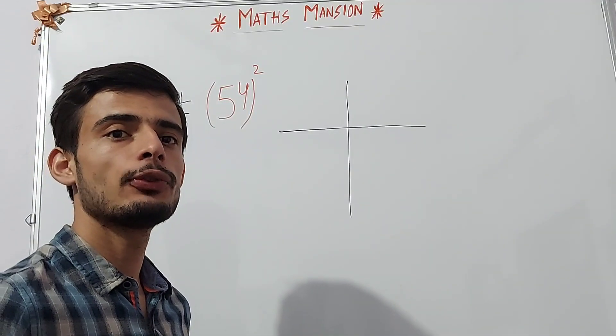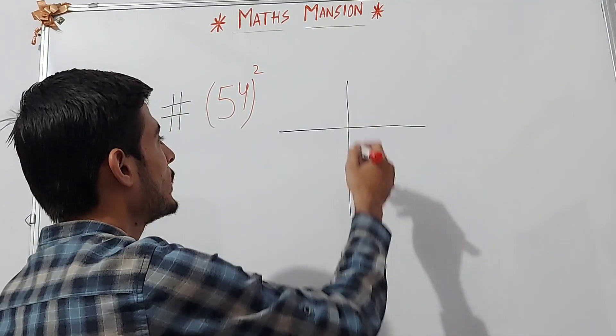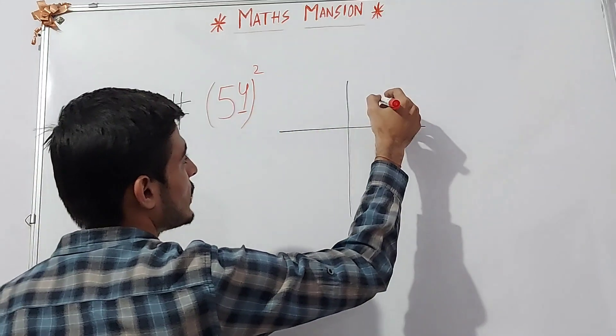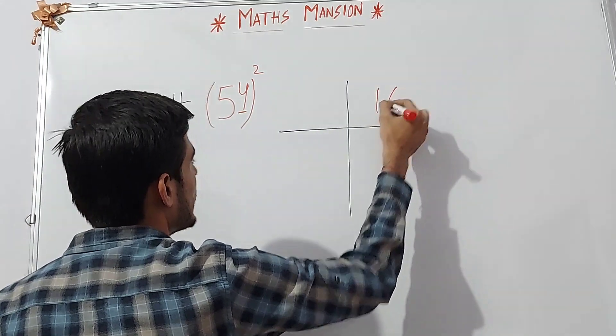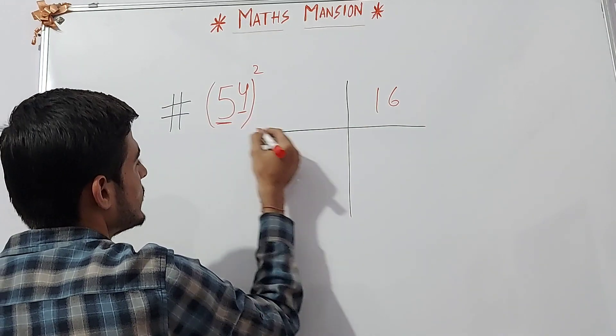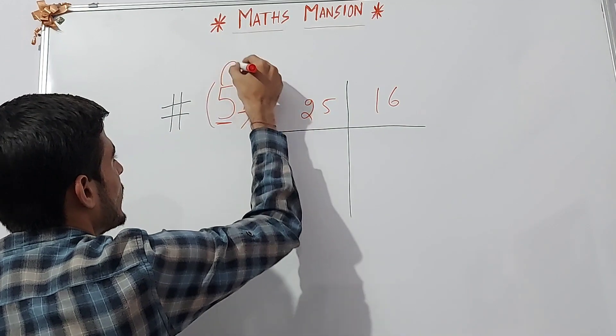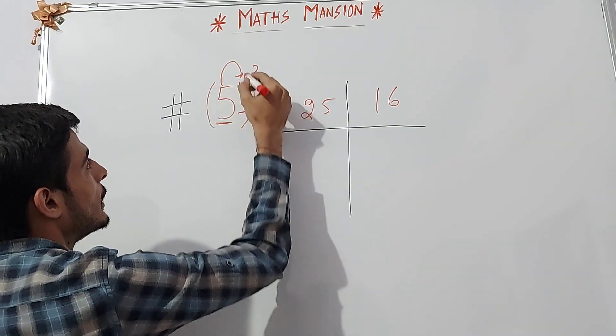If we have to find the square of 54, then we draw two intersecting lines like this and write the square of 4 in the first column, that is 16, and write the square of 5 in the second column, that is 25. Now multiply 5 with 4 and 4 with 2.